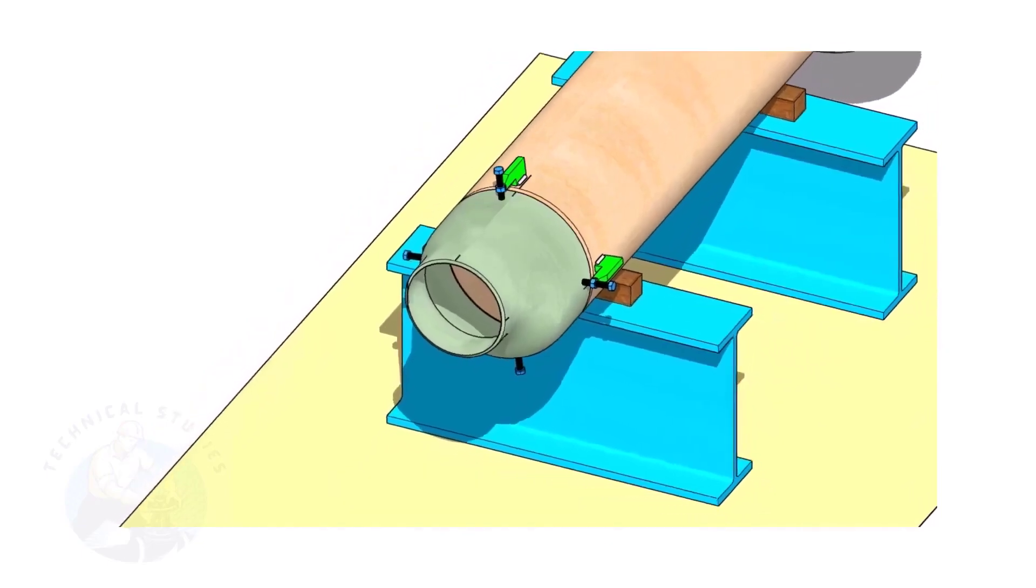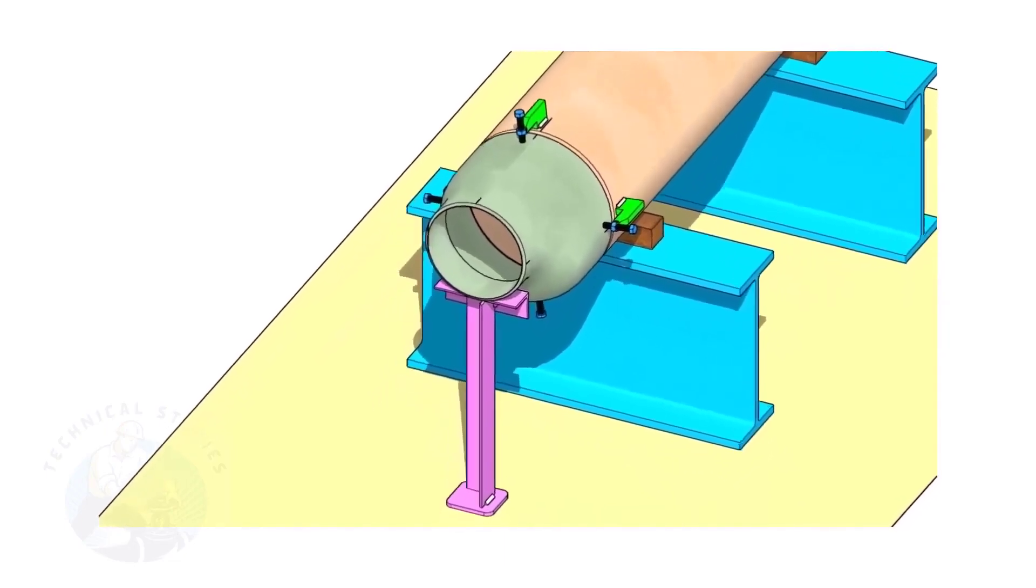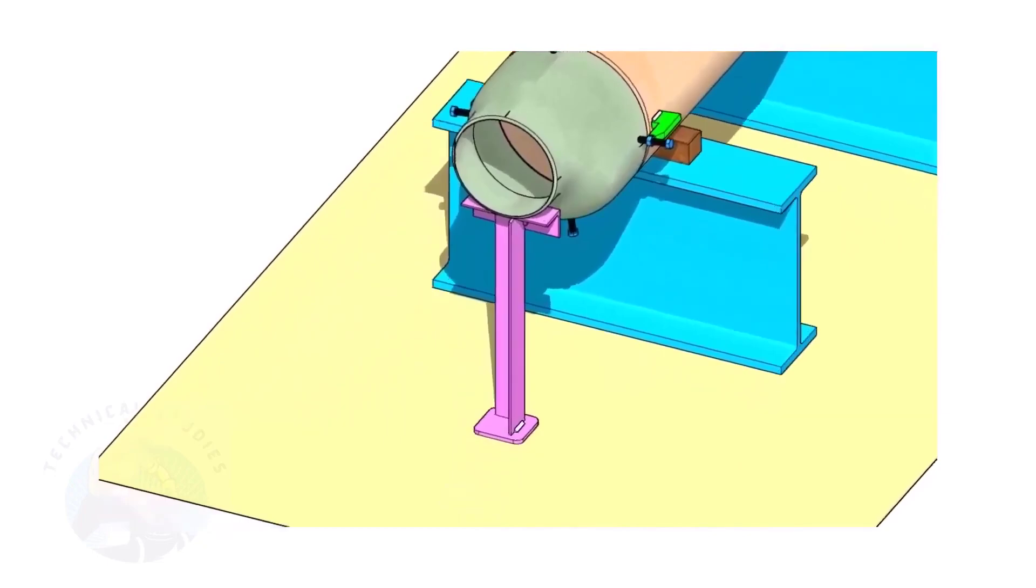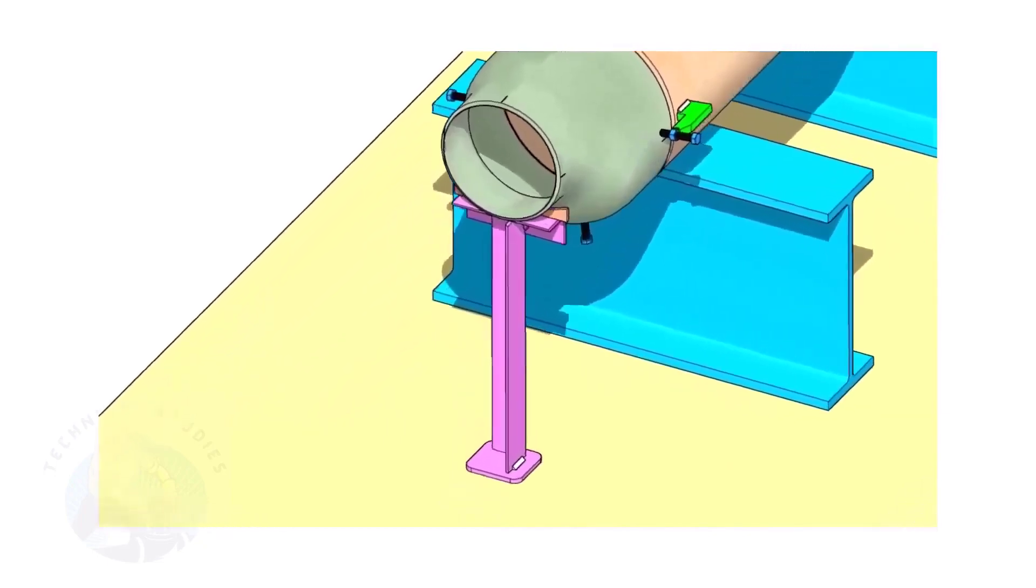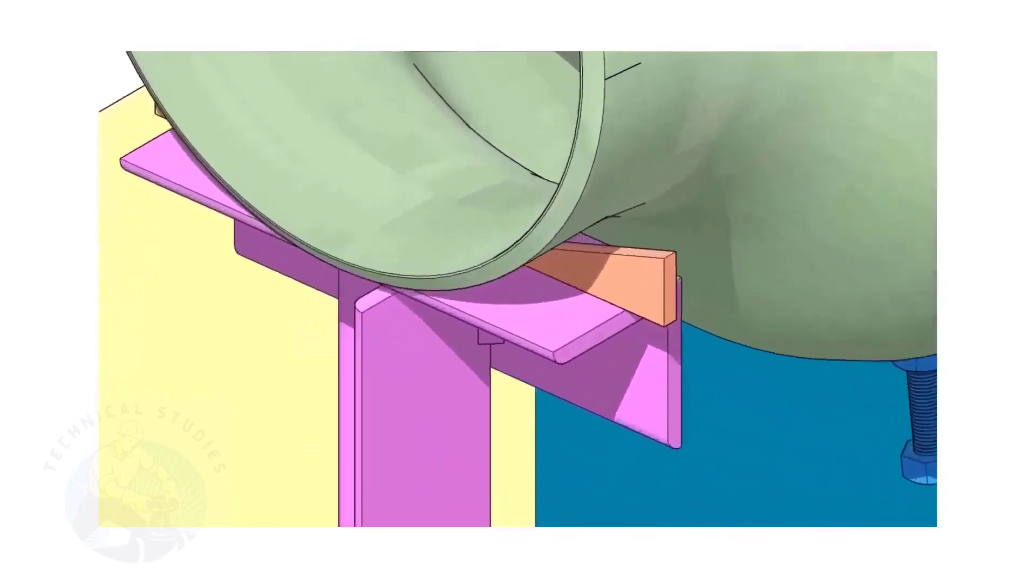Put the reducer in the clamps. Slightly tighten the bolts. Arrange proper supports below the reducer. The height of the support shall be adjustable. Here, I used simple wedges.